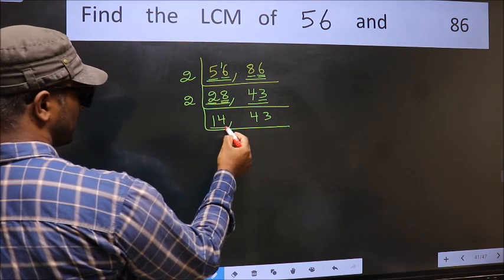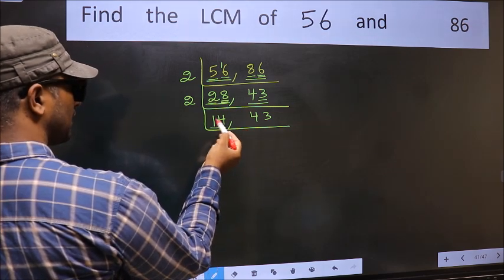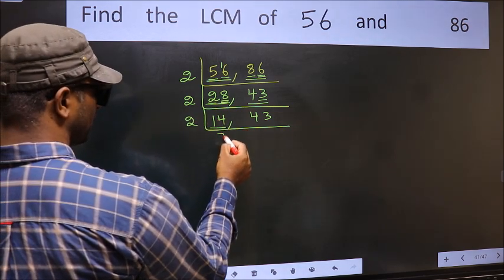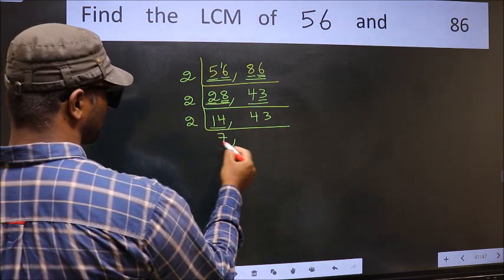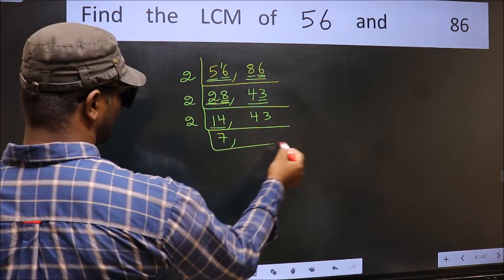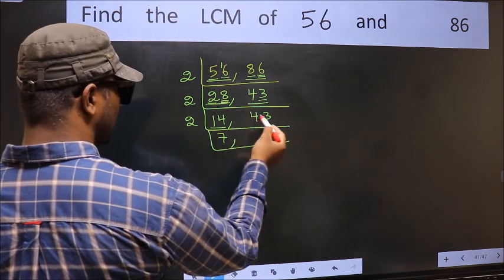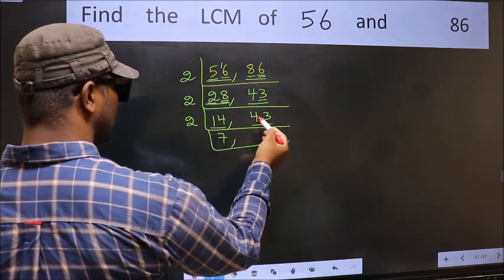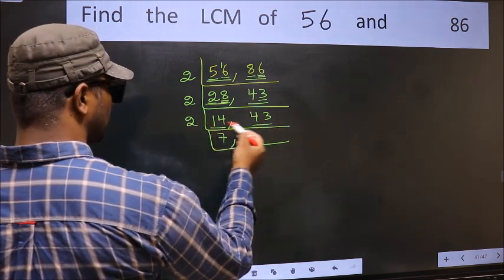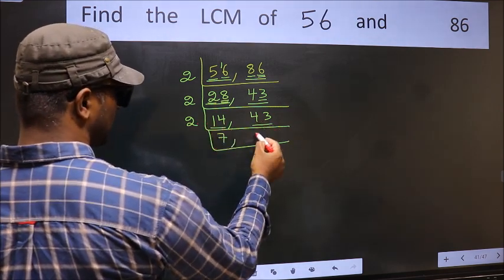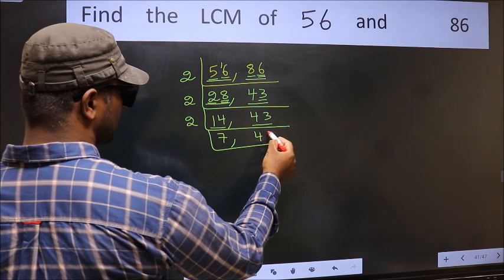Now we have 14. 14 is 2 sevens — 14. The other number is 43, which is not divisible by 2, so write it down as it is.